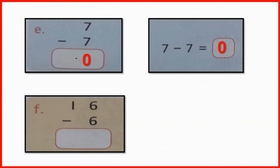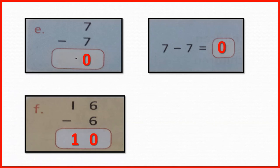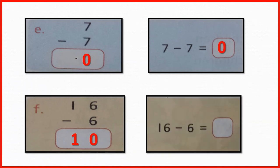The next is subtract 6 from 16. First, subtract 6 from 6 — what number remains? Yes, the number remains 0. Now, there is nothing to subtract from 1, so we write 1 here. That means when 6 subtracts from 16, the number remains 10. Now, subtract 6 from 16 in horizontal form: the number remains 10.